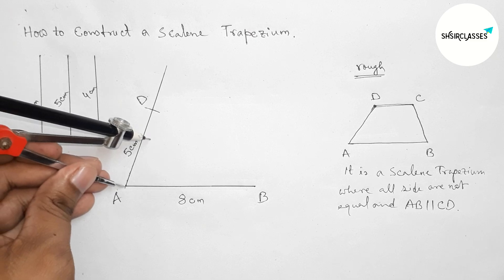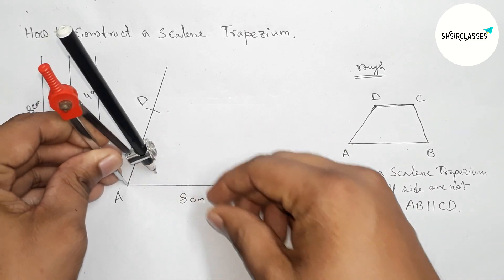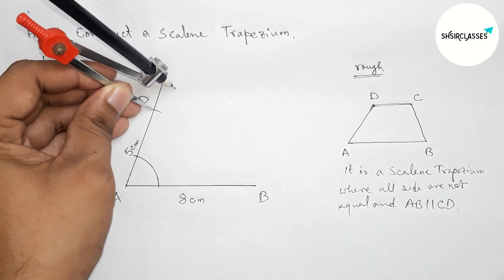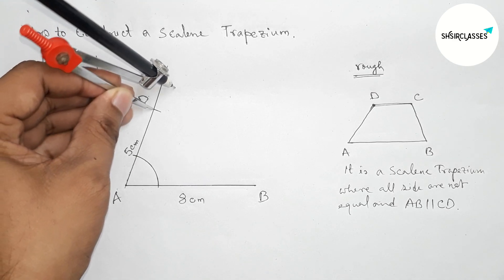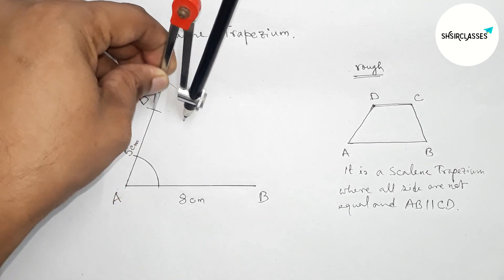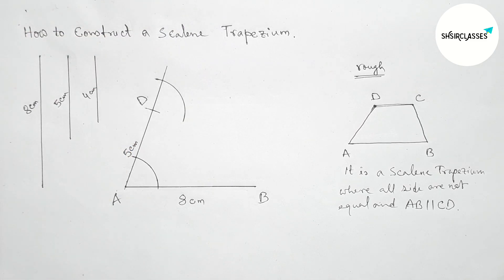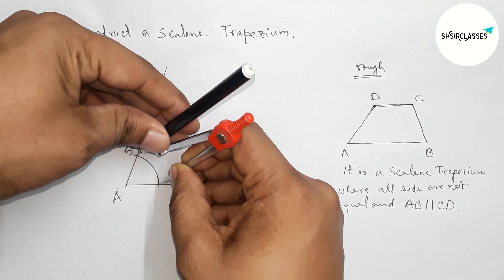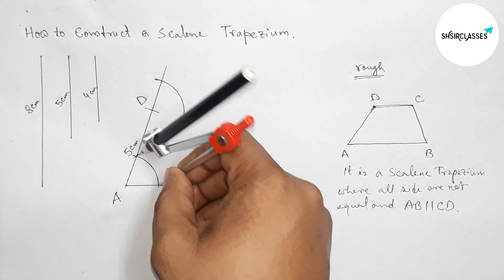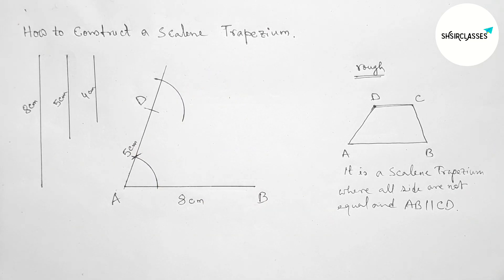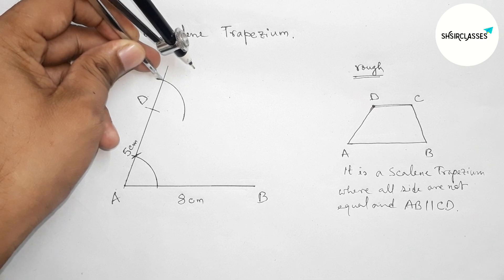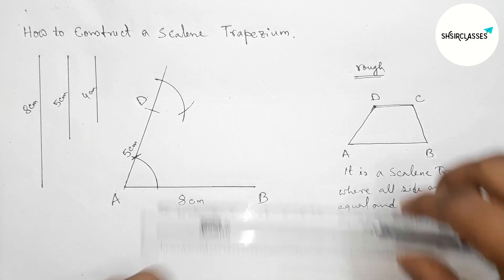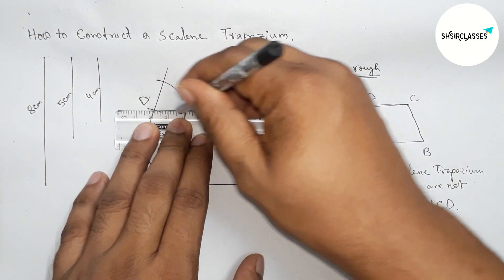Next we have to draw a parallel line with AB at point D. First measuring the angle, putting the compass here and taking the same length, drawing an arc. Now taking the length between the lines with the compass — this is perfect. Putting the compass on the point and cutting here. Now joining this line which is parallel with AB.